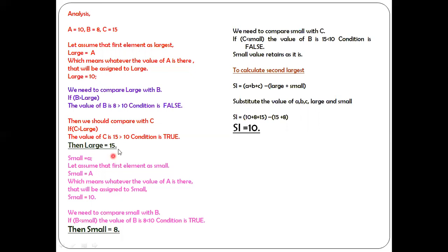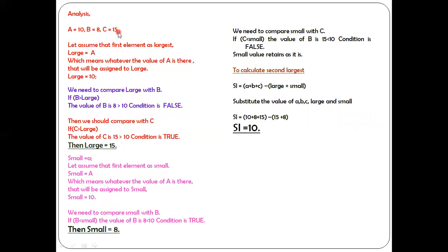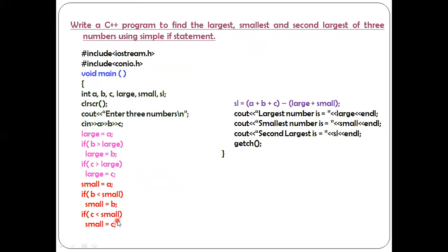Now small equals 8 and large equals 15. Next, if c is less than small — the value of c is 15, and small is 8. Is 15 less than 8? Condition false. So this statement will not be executed. Since the condition is false I skip it and move on to the next part.